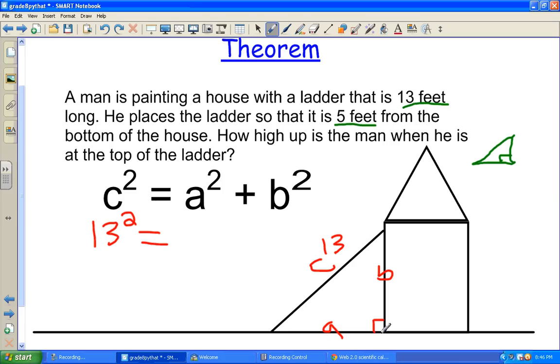Do we know A, or the distance it is from the bottom of the house? It said that it's 5 feet from the bottom of the house. So the answer down at the bottom is 5. So we'll put in 5 for A. And the only thing we don't know is the height, or how far up the man is, or B squared.